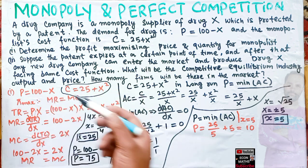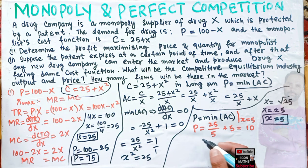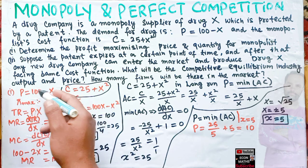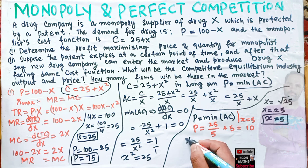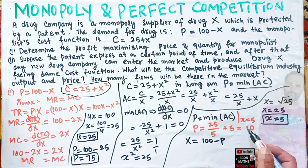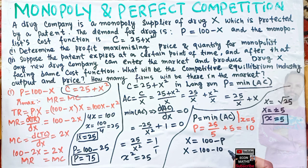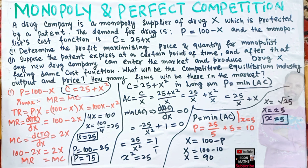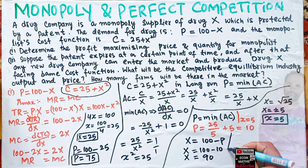Now let us find the total industry output. From the demand function p = 100 - x, we can write x = 100 - p. Substituting p = 10: x = 100 - 10 = 90. So total output produced in this industry will be 90 units.